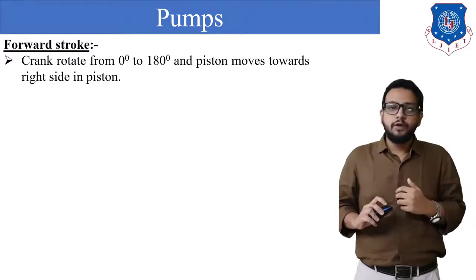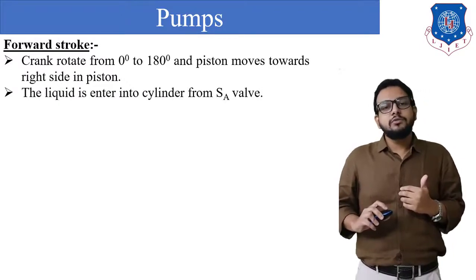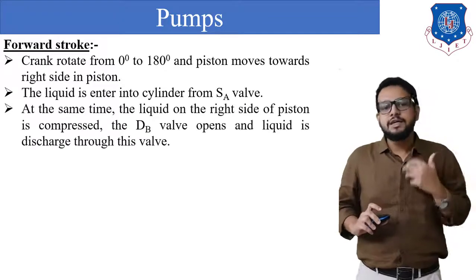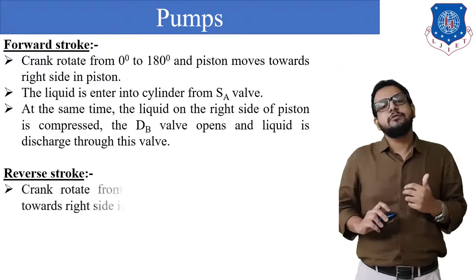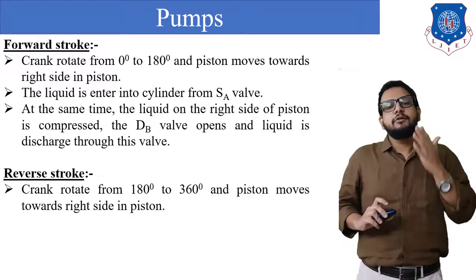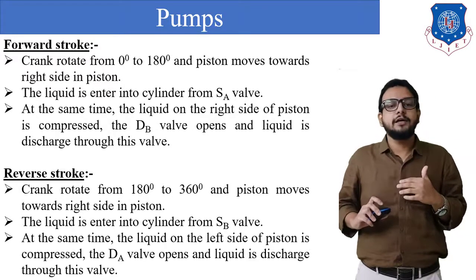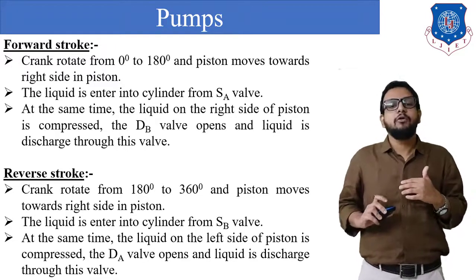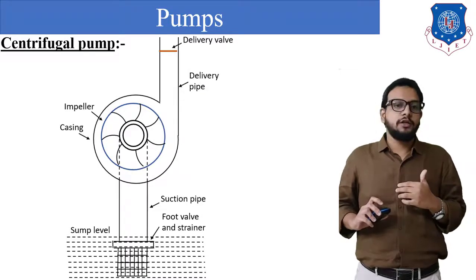In the forward stroke, the crank rotates from zero degrees to 180 degrees and the piston moves towards the right side in the cylinder. Liquid enters into the cylinder from suction valve Sa. At the same time, the liquid on the right side of the piston is compressed, delivery valve Db opens, and liquid is discharged through the valve. This is how the double-acting pump works.